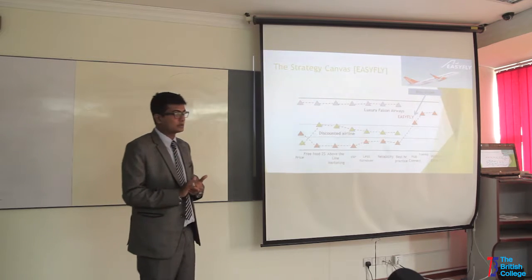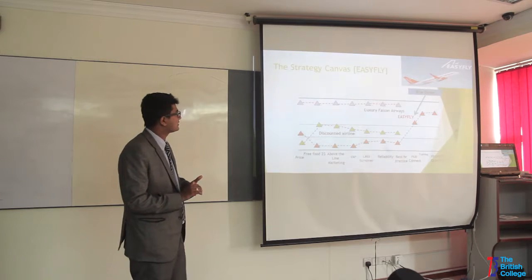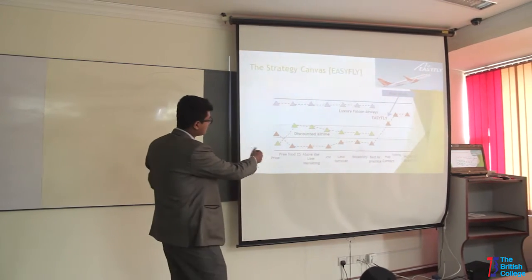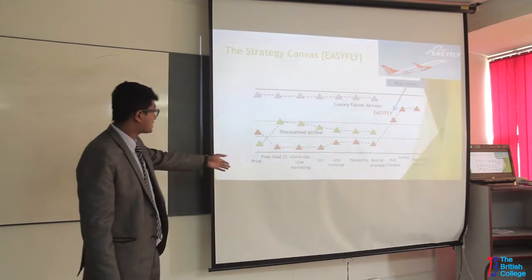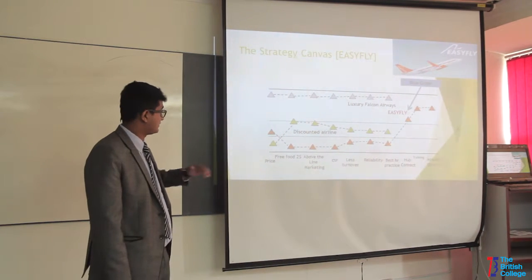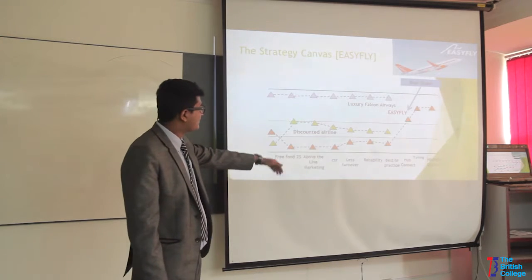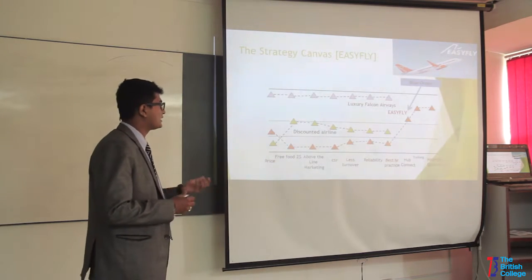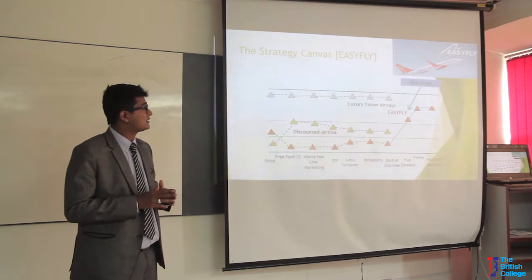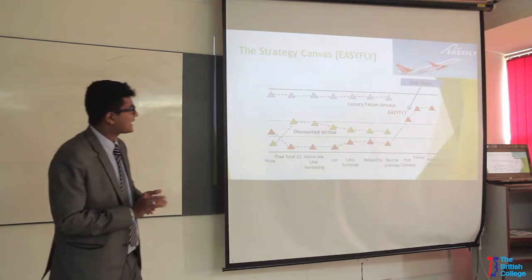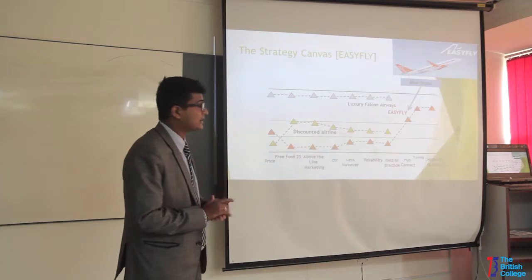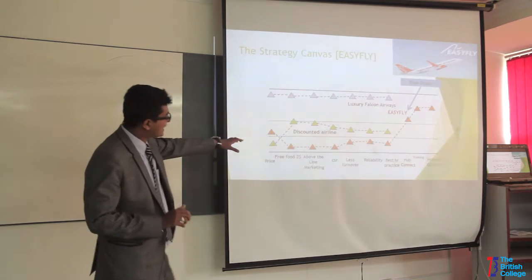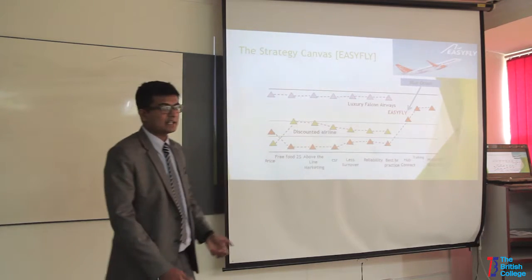This is the strategy canvas we used to differentiate our airline. Our airline has a price which is slightly above the discounted tier but we give all the features of luxury and discounted services. We have already given free food services and above-the-line marketing. We are accessibly funding our marketing and promotion campaign. We have thoroughly invested in CSR and we have less employee turnover. Our reliability is extremely high and we have implemented the best HR policy. The main focus has been the urban connect network — our routes are expanded into 10 routes which will help us gain market share. On training, to improve quality we have focused highly on training, and we deliver the highest quality. This helps us create a blue ocean market for our airline and separate us from the competition.